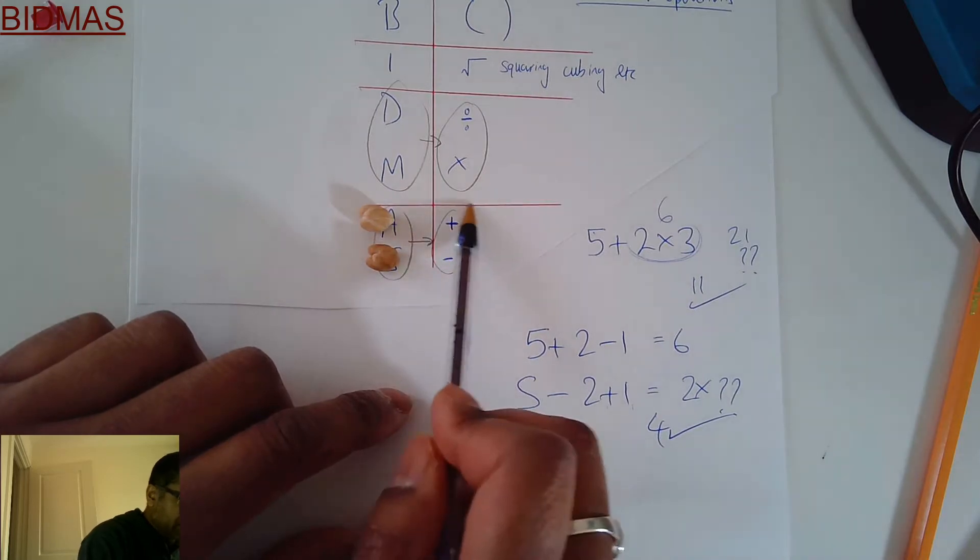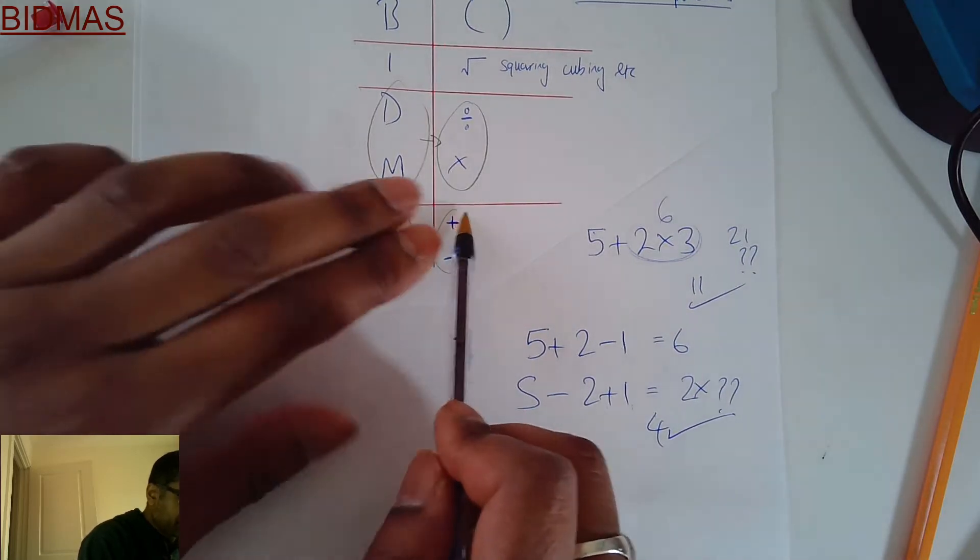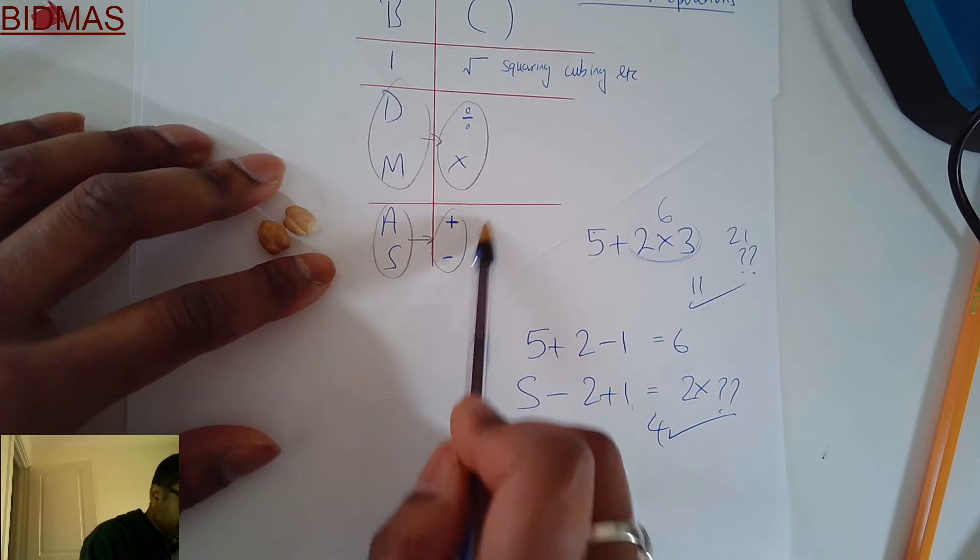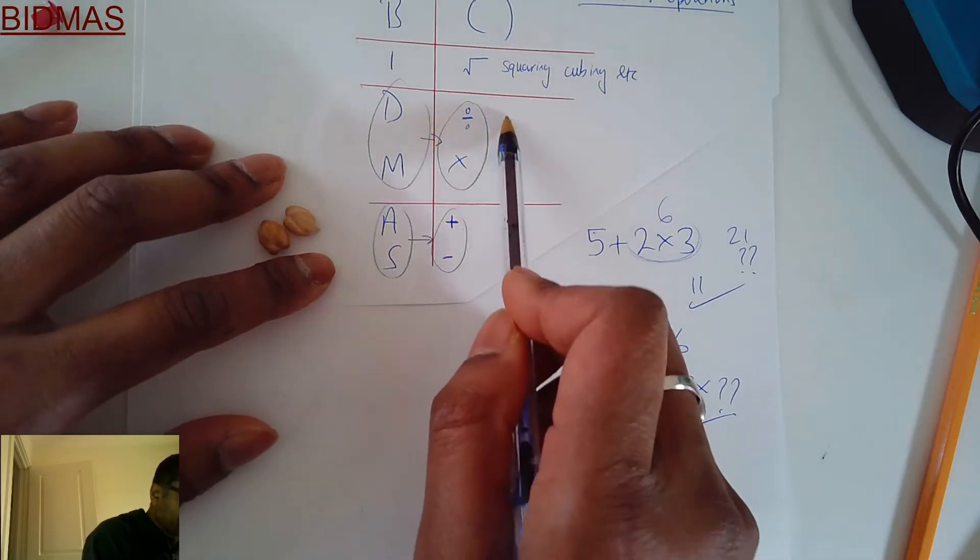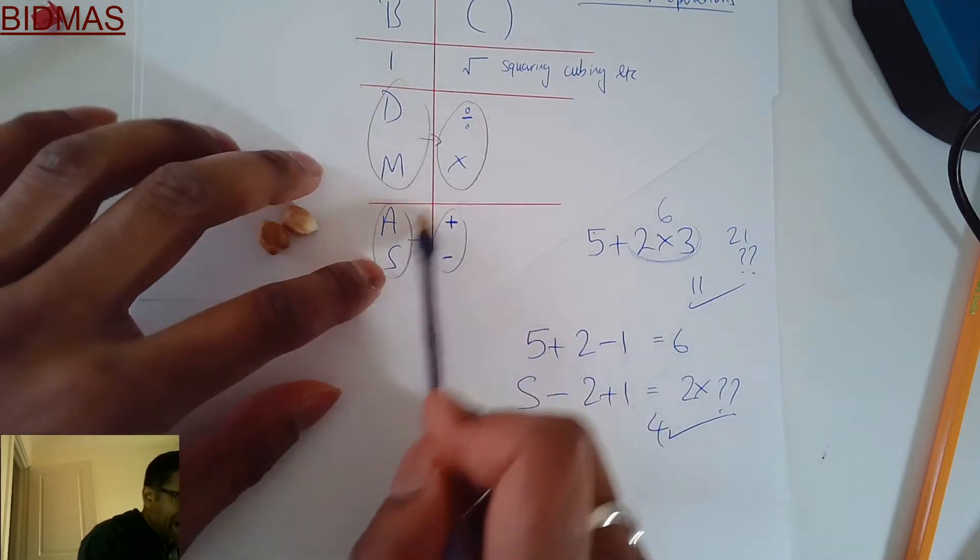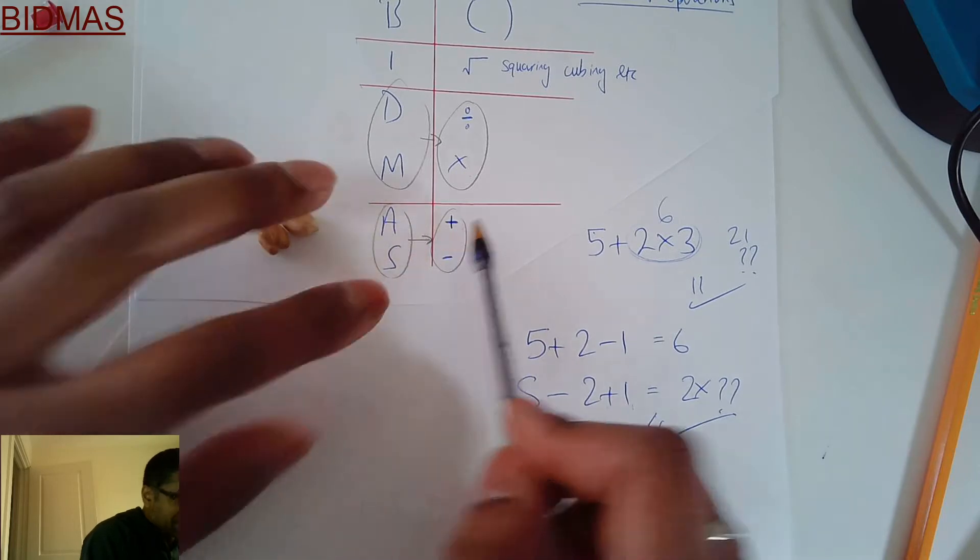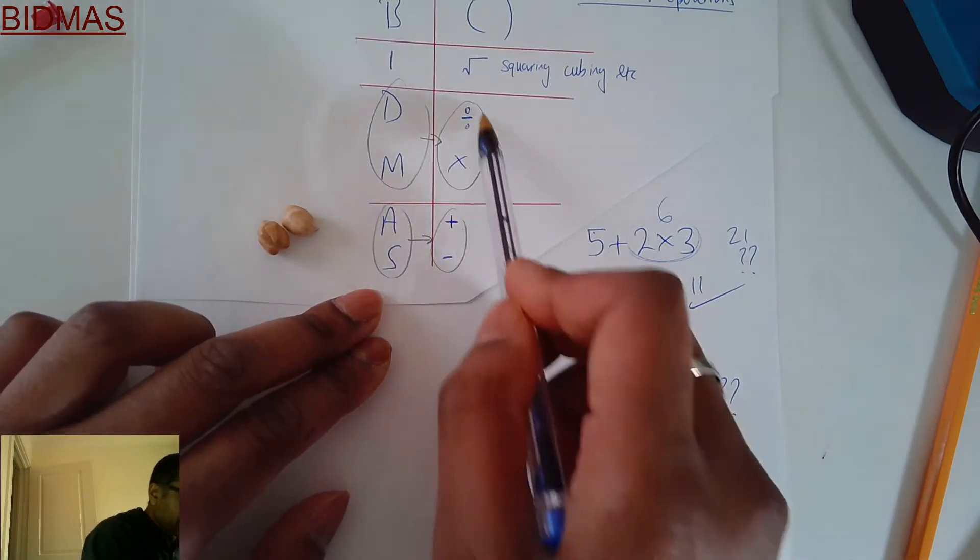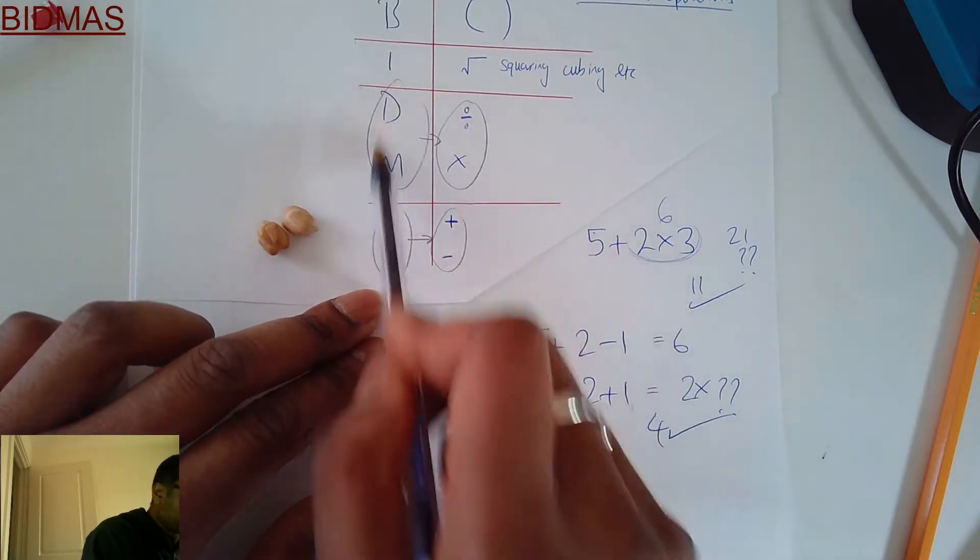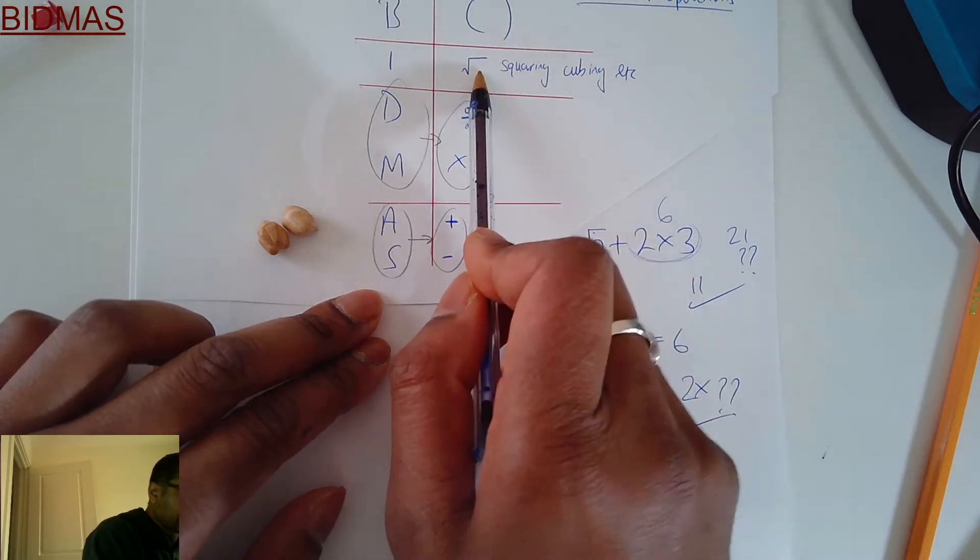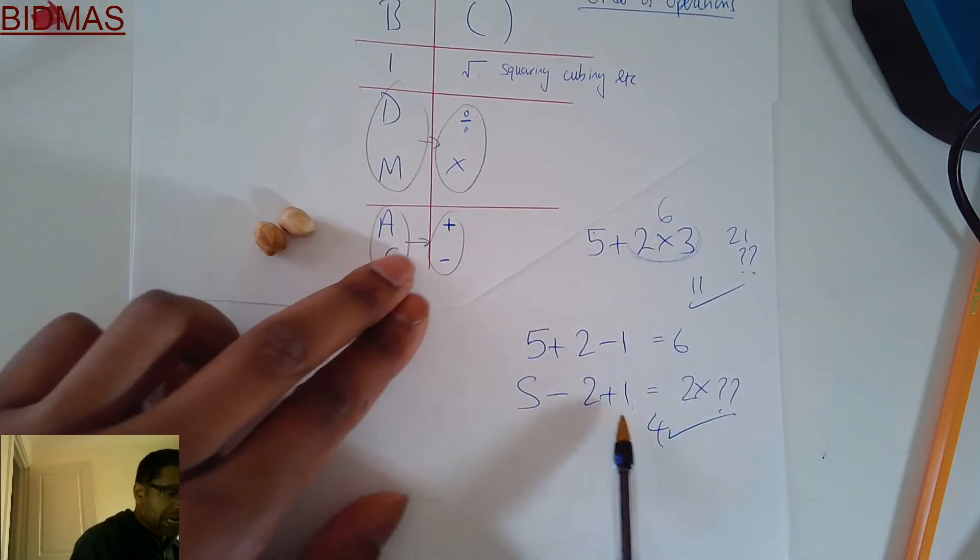Why? Well, whenever you got adding and taking away, notice they're in the same division. They're in the same category or same league here. The dividing and times-ing in a separate league. Indices another league, and right at the top of the league you got the brackets.